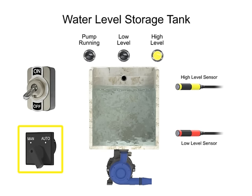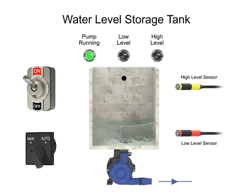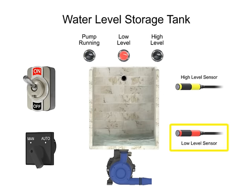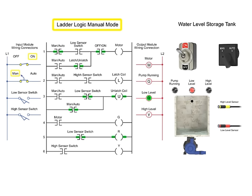In Manual mode, the program controls the water level by monitoring the low sensor switch input. In this mode, the pump motor turns off when the low sensor switch is off and turns on when the low sensor switch turns on.